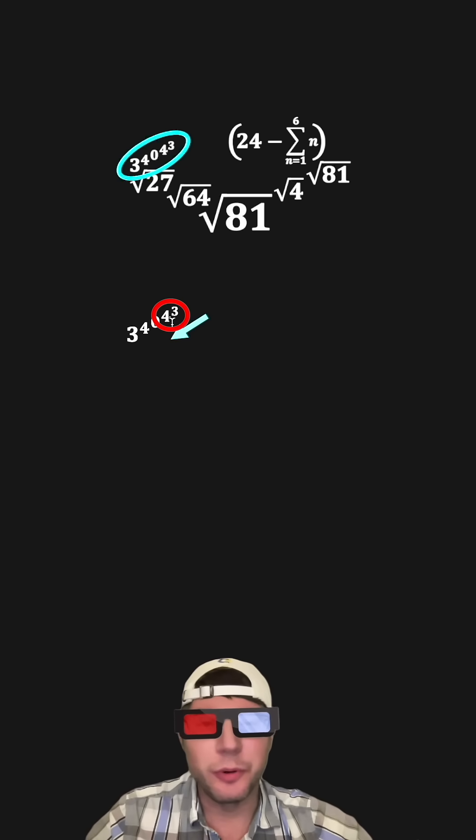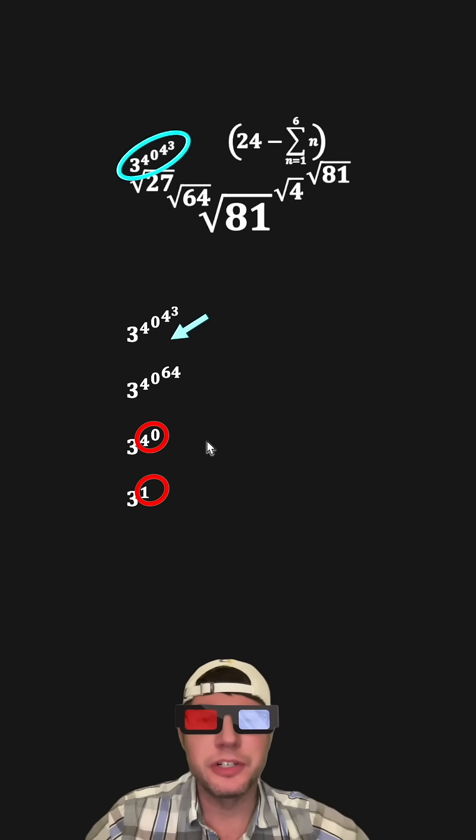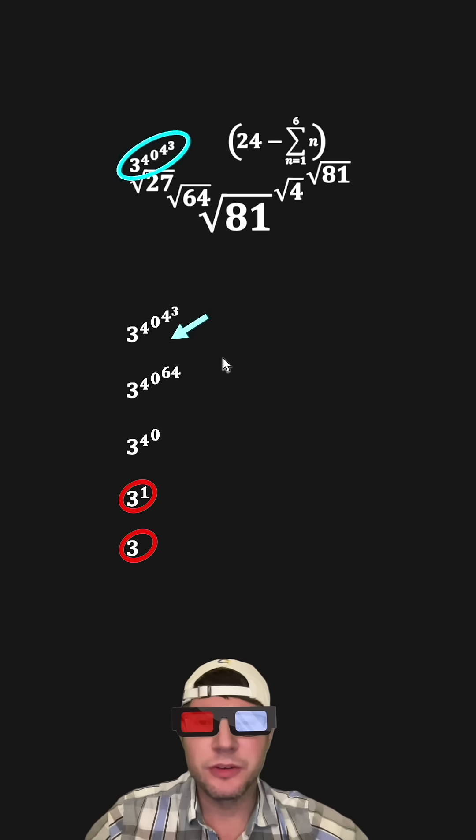And let's evaluate this one. First, we're going to focus on the 4 to the 3, and that'll give us 64. And then we do 0 to the 64, which is 0. And then we do the 4 to the 0, which is 1. And then 3 to the 1 is equal to 3. So this whole thing is equal to 3.